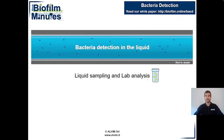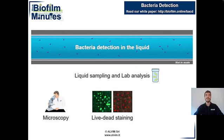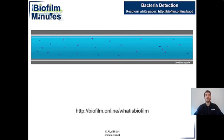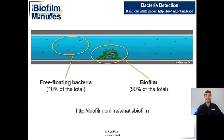There are hundreds of available bacterial detection techniques when it comes to liquid analysis. Most of them require to sample water first. Among these, common methods are based, for example, on microscopy, which can be combined with staining techniques, for example to distinguish between live and dead microorganisms. And then there are many other techniques, such as flow cytometry. These techniques are generally time and money consuming, characterized by a need of expensive equipment and dedicated personnel. Most importantly, these do not provide any information on the layer of bacteria which forms on surfaces in contact with the liquid, a biological phenomenon known as biofilm.